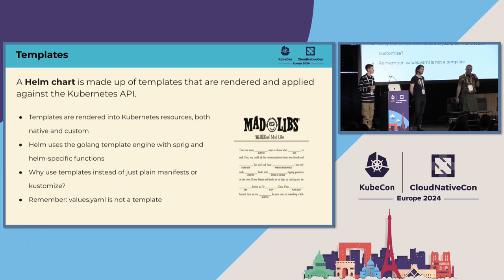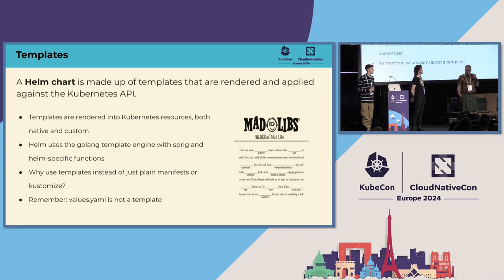A common question is: why do I need Helm, why wouldn't I just create manifests? If manifests are right for you, do it — sometimes you don't need to template things when deploying the same thing repeatedly. But if you want to ship your product to other people and let them configure it for their own needs, that's when Helm becomes really powerful. Also remember: values.yaml is not a template — don't put Go template formatting in it because it won't render.